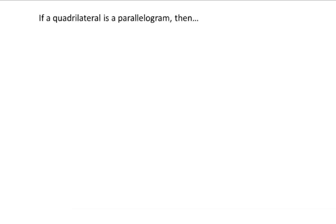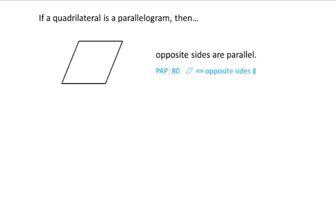Parallelograms have five different properties that you're going to need to memorize. For each of these there's going to be a picture and the finish of this sentence. If a quadrilateral is a parallelogram, then the opposite sides are parallel. Go ahead and draw your picture. The top and bottom are going to be parallel and the left and right sides are going to be parallel.